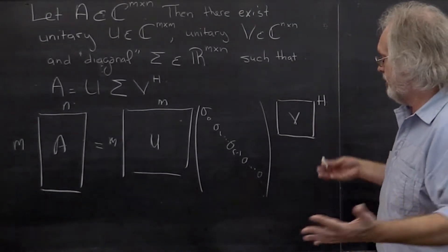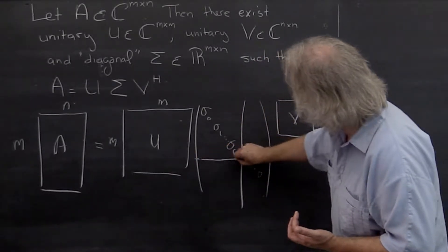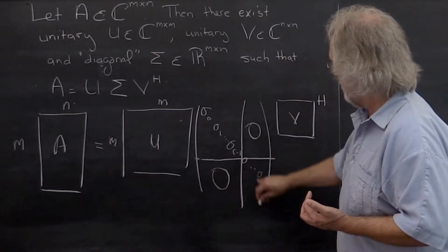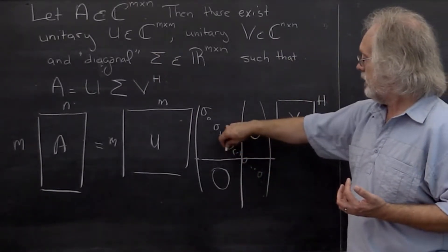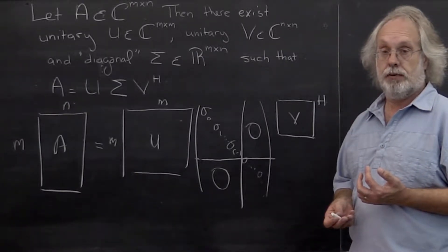Now another way of thinking about this is that at some point you can block this and say, there's a block of zeros here, there's a block of zeros here, there's a block of zeros here, and there's a diagonal matrix sitting right here.